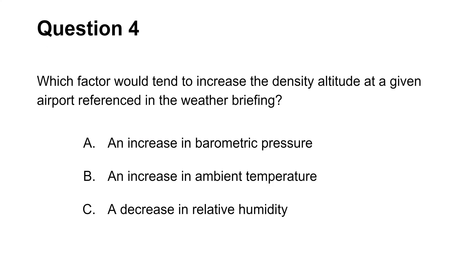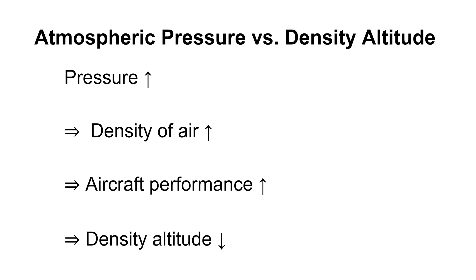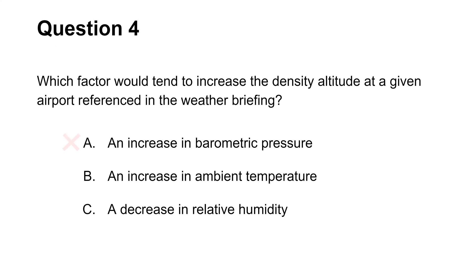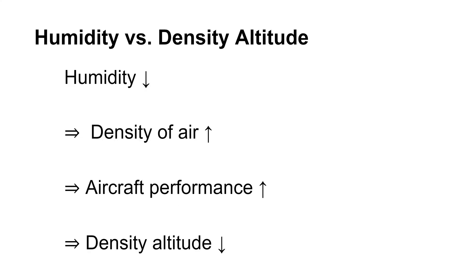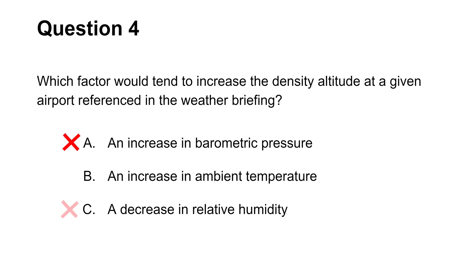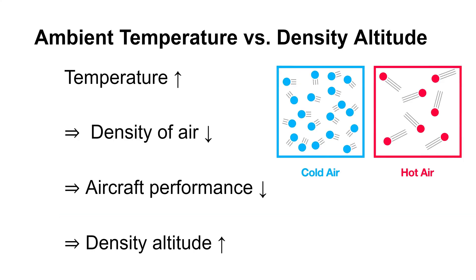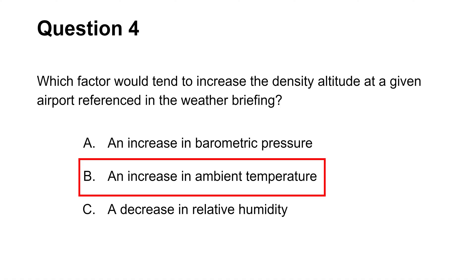In the next question, you need to identify a correct factor that will increase the density altitude. Remember, barometric pressure is inversely related to density altitude, so A is incorrect. A decrease in humidity would decrease the amount of water vapor in the air, thus increasing the amount of air molecules per fixed volume, which would increase air density and actually decrease density altitude — making choice C incorrect. Because an increase in ambient temperature leads to less air density and thus higher density altitude, the answer is B.